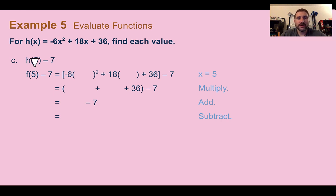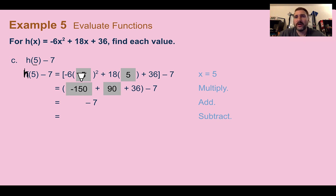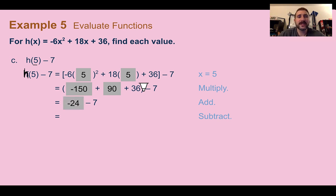For part c, find h of 5 minus 7. Note: this should say h — we're working with function h. We plug in 5: negative 6 times 25 is negative 150, plus 90, plus 36 gives negative 24. Then subtracting 7: negative 24 minus 7 is negative 31.